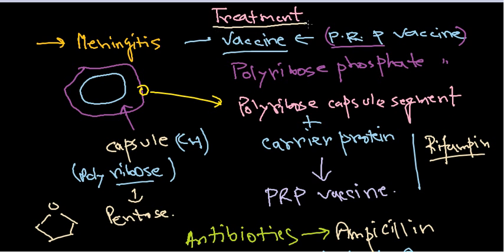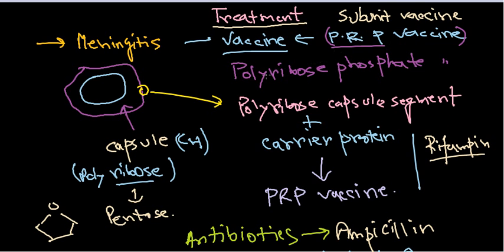The capsular part of Haemophilus influenzae is important because the capsule is antigenic and immunogenic in nature — it helps develop the immune system. When we use this capsule for vaccine production, it is called a subunit vaccine, because we are utilizing a subunit of the bacterial cell. So the PRP vaccine is a kind of subunit vaccine.